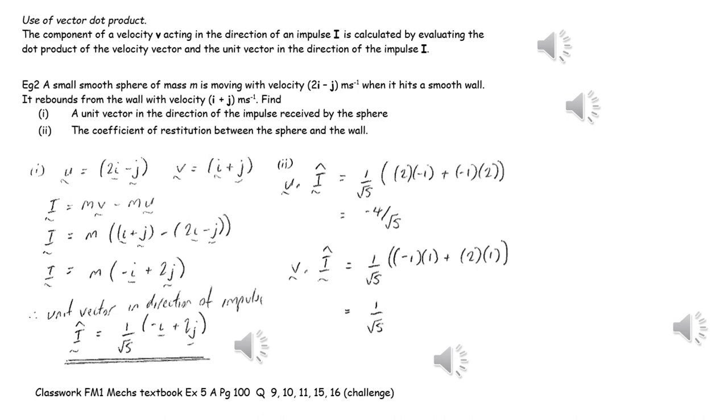Here we are working out the component of the velocities before and after the impact in the direction of the impulse. So u dot i hat we can evaluate, and v dot i hat we can evaluate, and then we will be able to apply Newton's experimental law to work out the value of e.